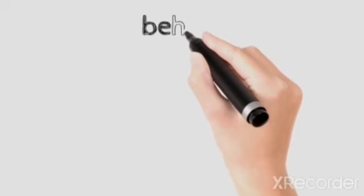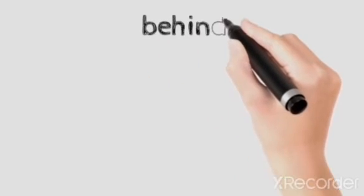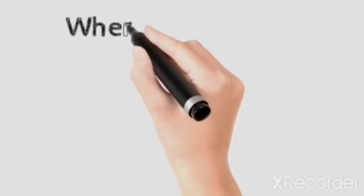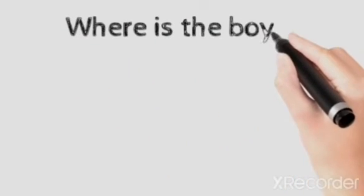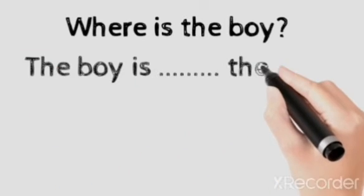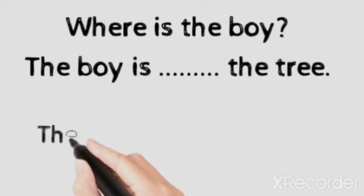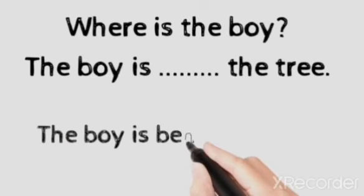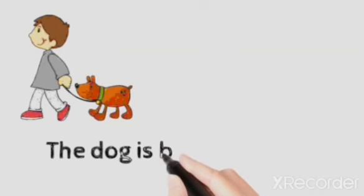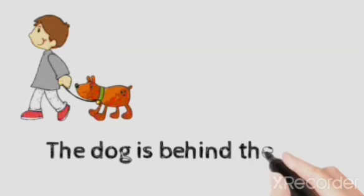Last preposition: 'behind'. There is a boy and a tree. Where is the boy? The boy is behind the tree. Second example: there is a boy and a dog. The dog is behind the boy.